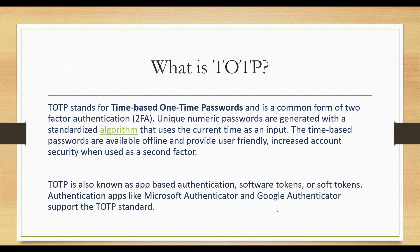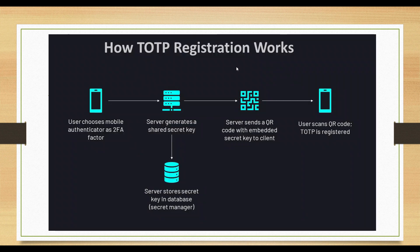This is also called app-based authentication, software token, or soft tokens. We are going to use Google Authenticator in this video. Once you complete registration, a server will generate a secret key that gets stored in the database with your user record. Using that secret key, the server will generate a QR code containing the algorithm, number of digits, how frequently the one-time password changes, and more. The user scans the QR code using the authenticator app, which allows them to generate OTPs matching the server's algorithm.